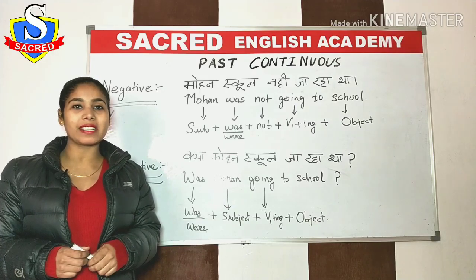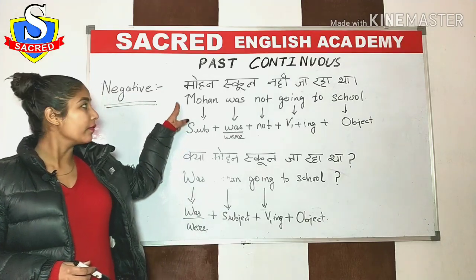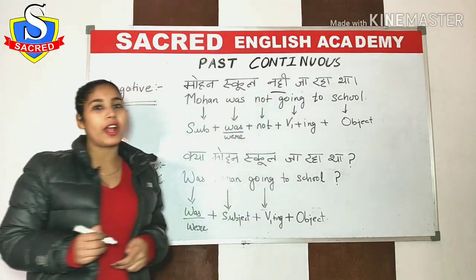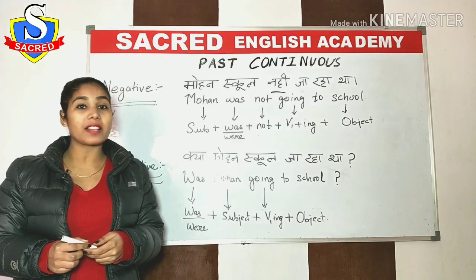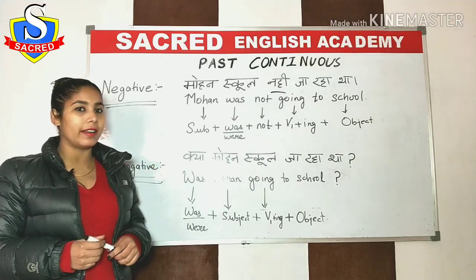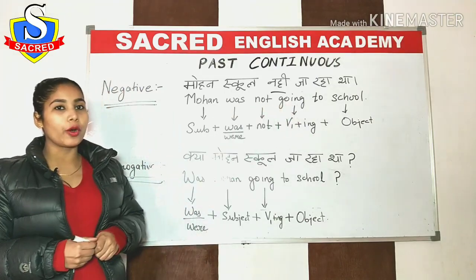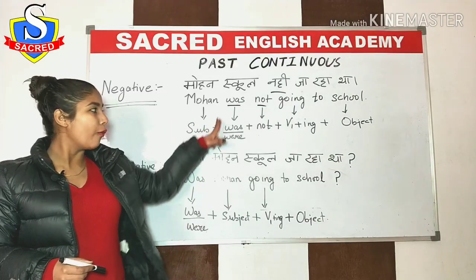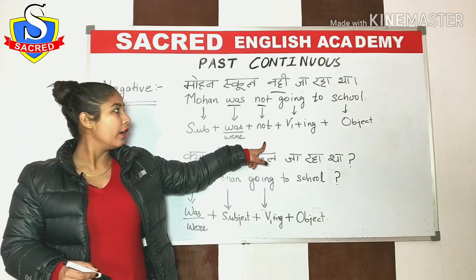I will explain with the same example. Mohan school nahi ja raha tha — here you can see the word 'nahi', which means negative. Since it still ends with 'raha tha', we use past continuous. For negatives, everything remains the same — you just add 'not' immediately after 'was'. So: Mohan was not going to school. The structure is: Subject + was/were + not + verb first form + ing + object.